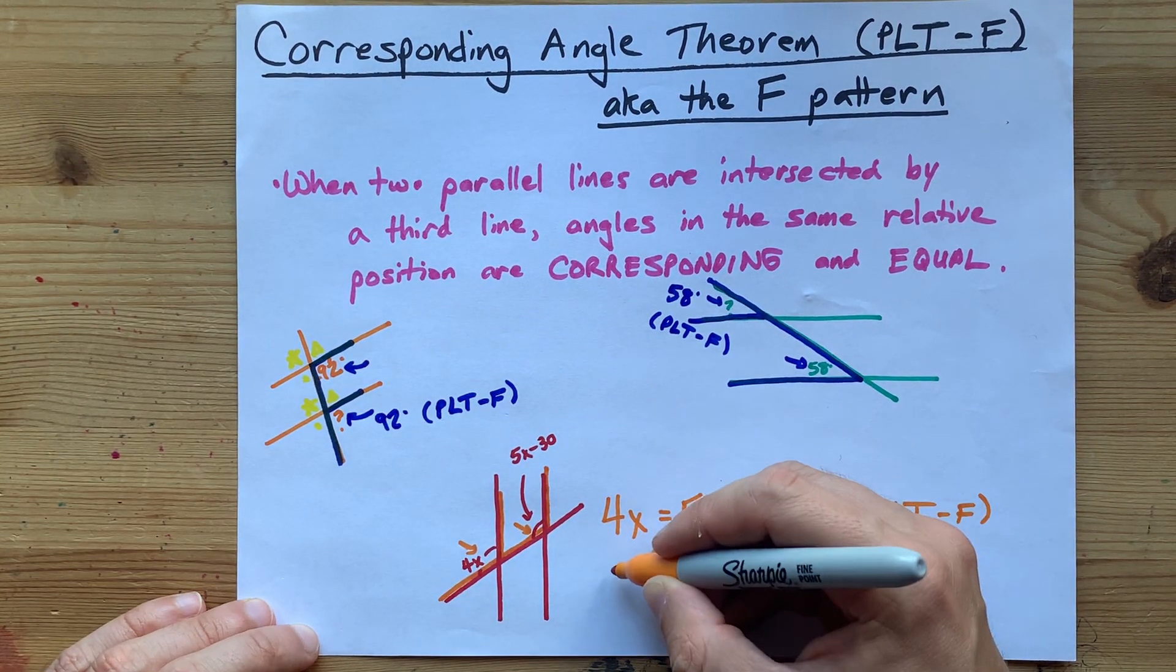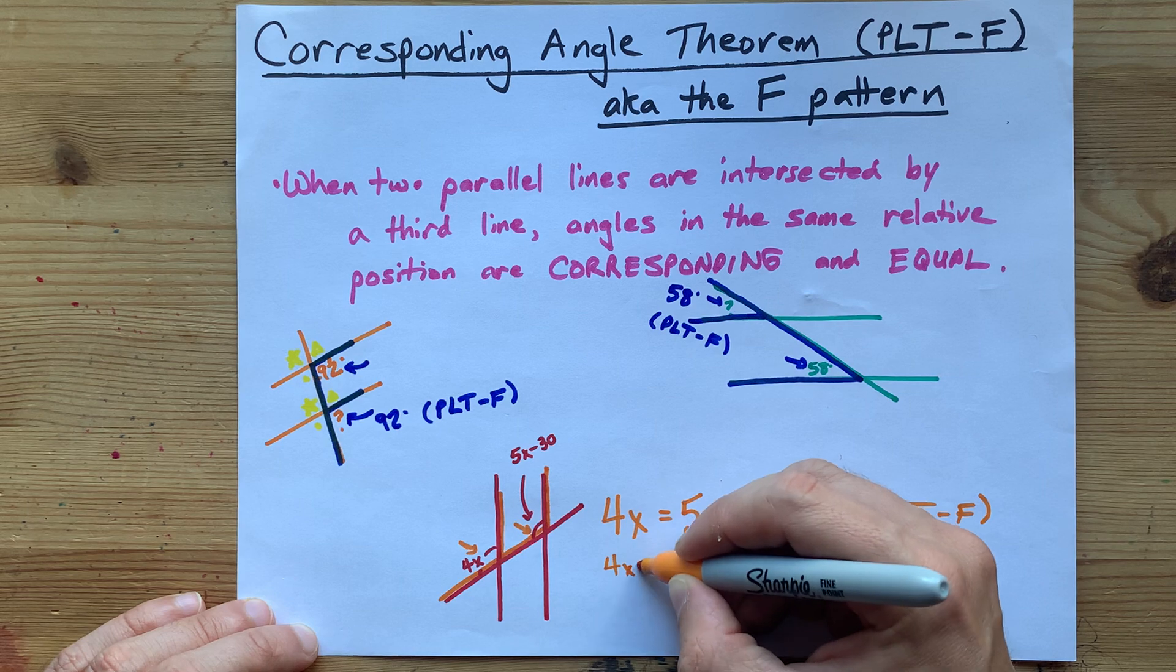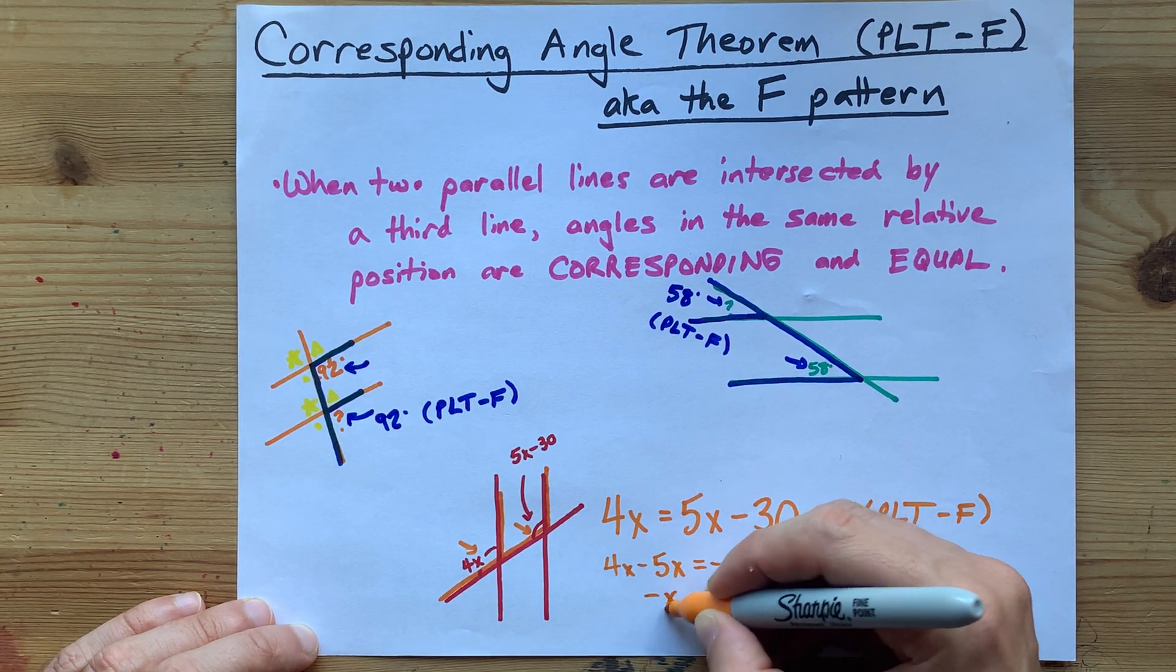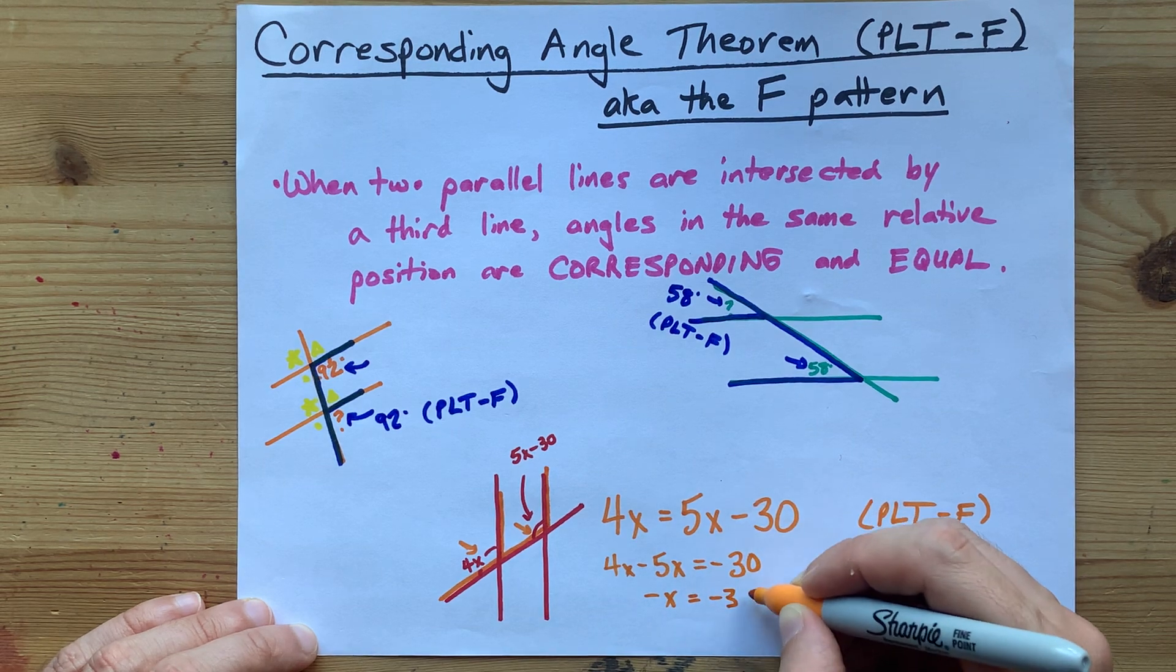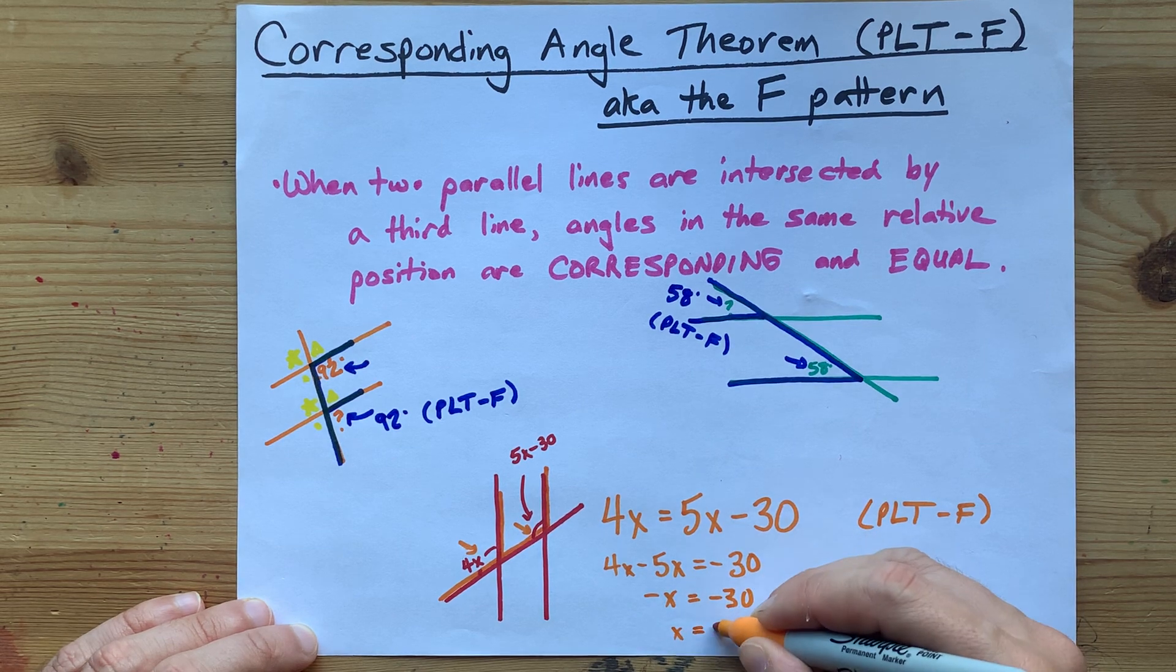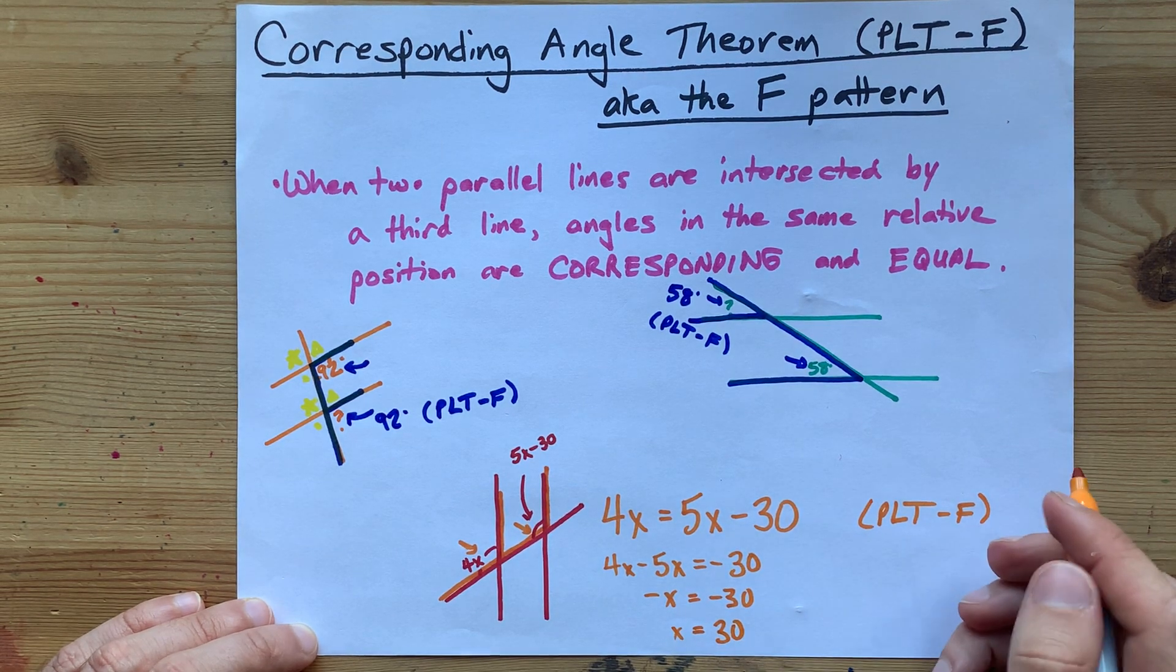Now I'm going to move 5X to the other side. I think I'm going to end up with negative X equals negative 30. Hopefully it's obvious that those negatives just cancel, but you can divide both sides by negative 1 if you want. X turned out to be 30 here.